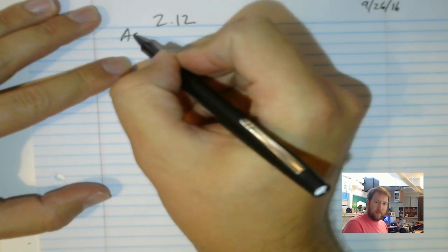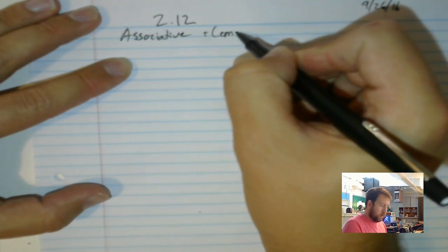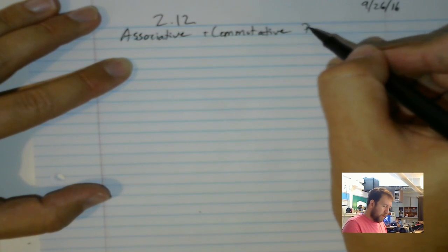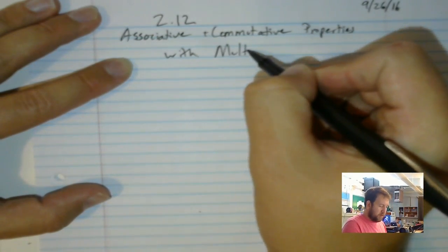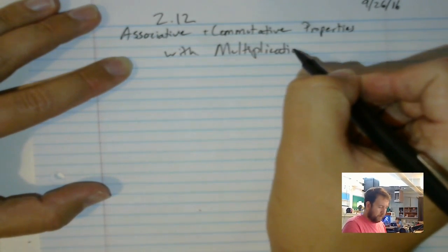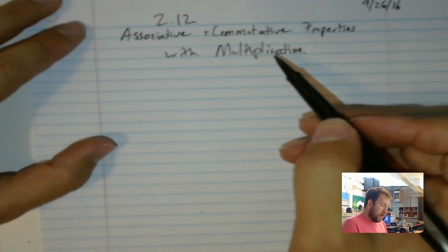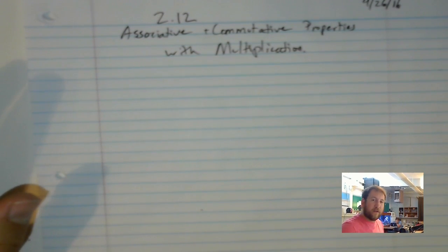So, 2.12 is going to be about the associative and commutative properties with multiplication. Now, this is very similar to what we did before. One of the keys to remember though is that multiplication is commutative with itself, but not with addition. And we'll kind of look at that later. But first, let's kind of refresh our memories on what the commutative property is and what the associative property is. And kind of how they're different and how that looks with multiplication.